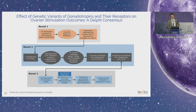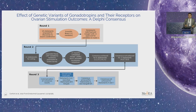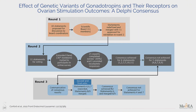Recently, together with other eminent figures, we produced a Delphi consensus about the effect of genetic variants of gonadotrophins and their receptors on ovarian stimulation outcome, focusing mostly on the polymorphisms involving the FSH system and the LH system, which are very important and crucial for folliculogenesis.